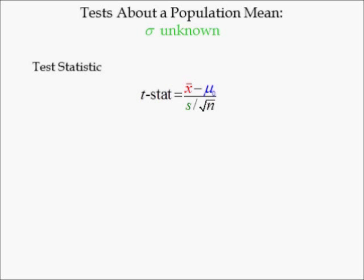When population standard deviation is unknown, the test statistic is referred to as t-stat, because statistical software programs refer to it as t-stat. The t-stat is identical to z-stat except sample standard deviation S replaces population standard deviation sigma, because sigma is unknown.